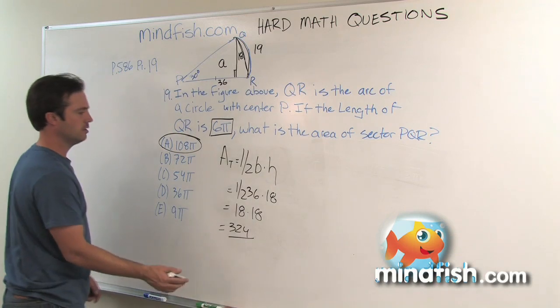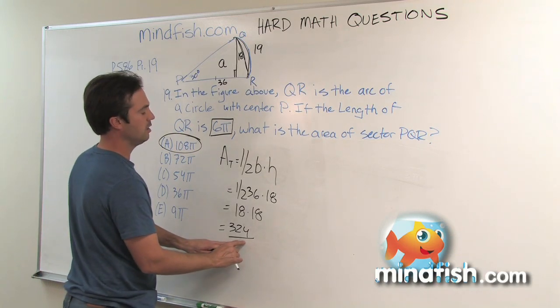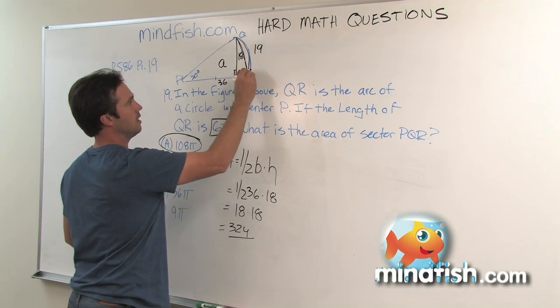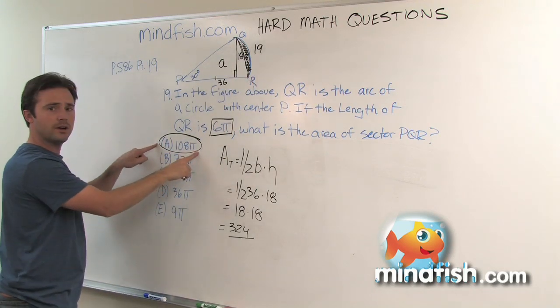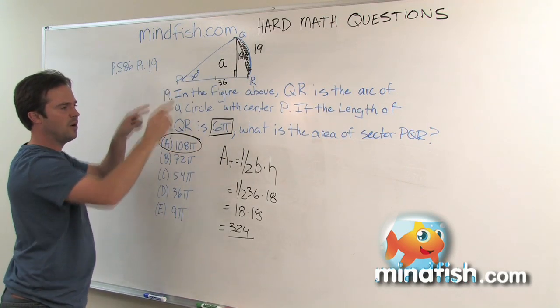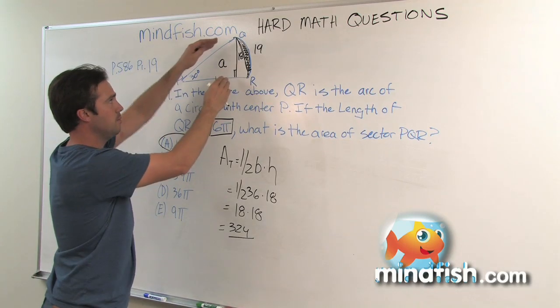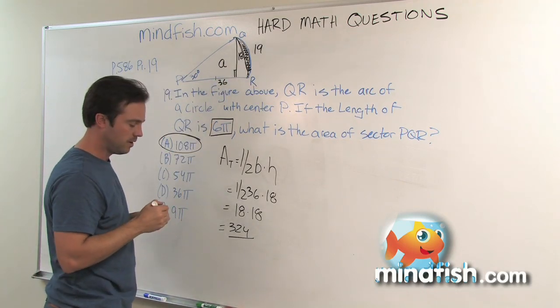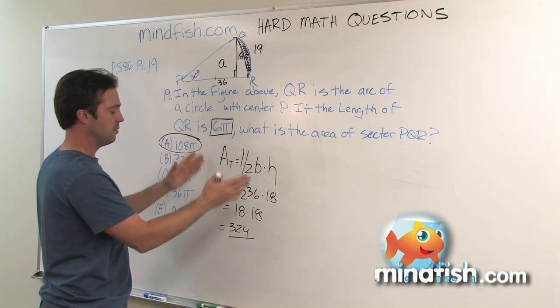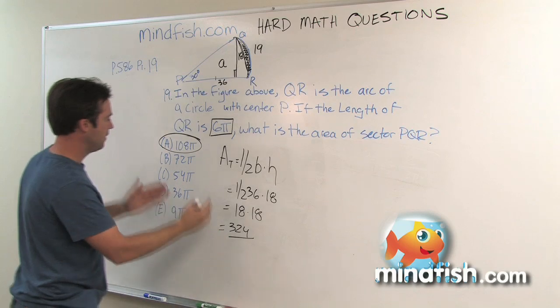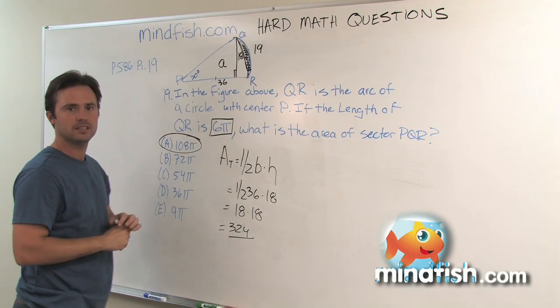Now looking at the answers, we expect to find an answer a little bit bigger than 324 because in our estimate we weren't including this. This is the only thing even close. So even though we had no idea how to do this as a sector of a circle, if we were willing to use the measuring approach, which is a very powerful approach whenever they don't say not drawn to scale, we could come up with an estimate as 324, and there's really only one answer that makes any sense.